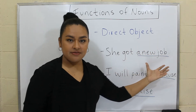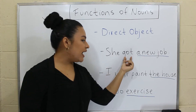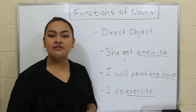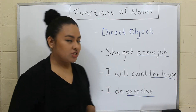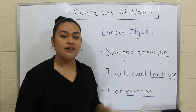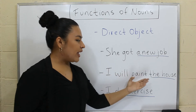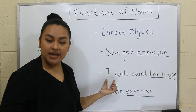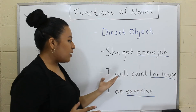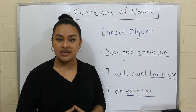She got a new job. In this sentence, she is the subject. Got is the verb. So if we ask what after the verb, we get the direct object. She got what? A new job. So a new job is the direct object. Then in the next one: I will paint the house. I is the subject of the sentence and will paint is the verb. So I will paint what? The house. So the house is the direct object.